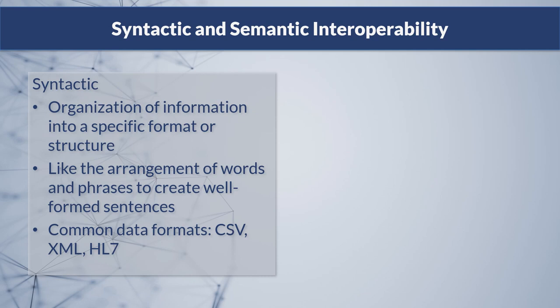In general, there are two types of interoperability: syntactic and semantic. Syntactic interoperability is the organization of information into a specific format or structure. Think of it like the arrangement of words or phrases to create well-formed sentences in a language. Once we transport information from one system to another, we need to know the syntax or structure of the information to understand what was sent. Some common data formats to exchange public health data are CSV, XML, and HL7.